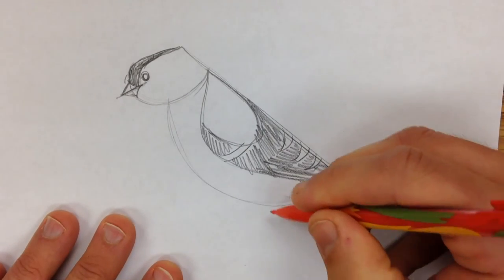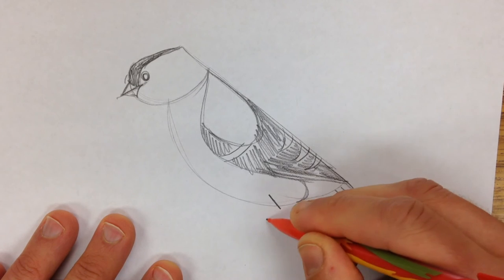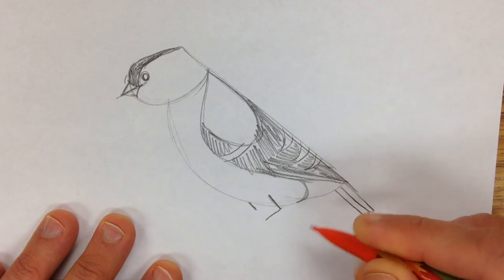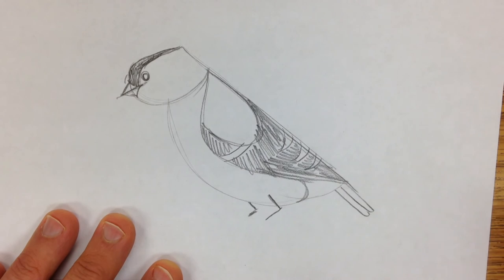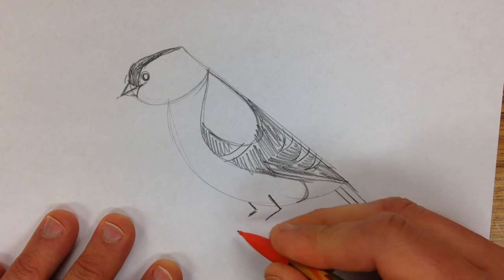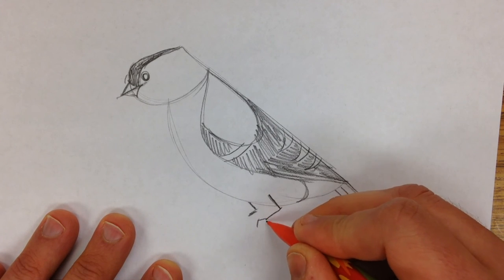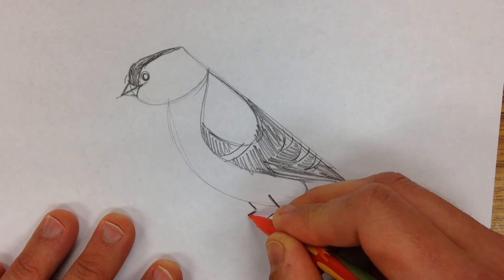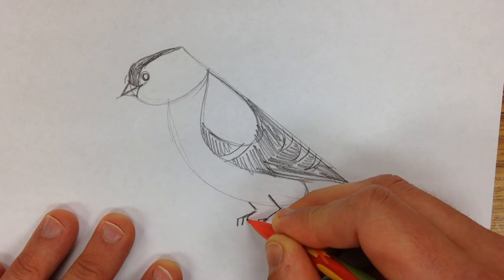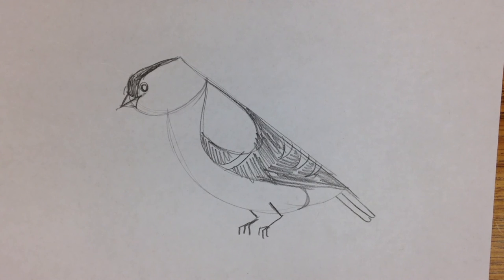Then I'm going to add some legs in. So let's start with one leg here. They bend. Their knees kind of bend backwards. And then we'll just add the toes, like so. We can perch on a branch. And there's our American goldfinch.